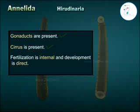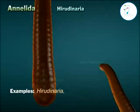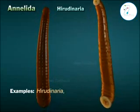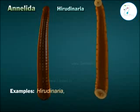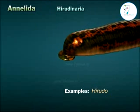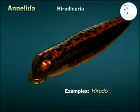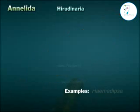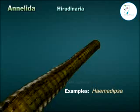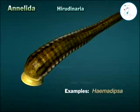They are bisexual and perform copulation. Gonads are present in few segments. Gonoducts are present. Clitellum is present. Fertilization is internal and development is direct. Examples: Hirudo, Haemadipsa, Pontobdella.